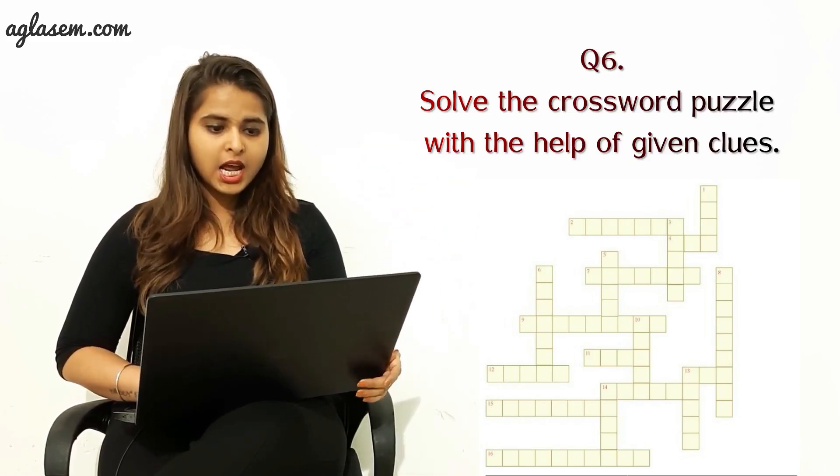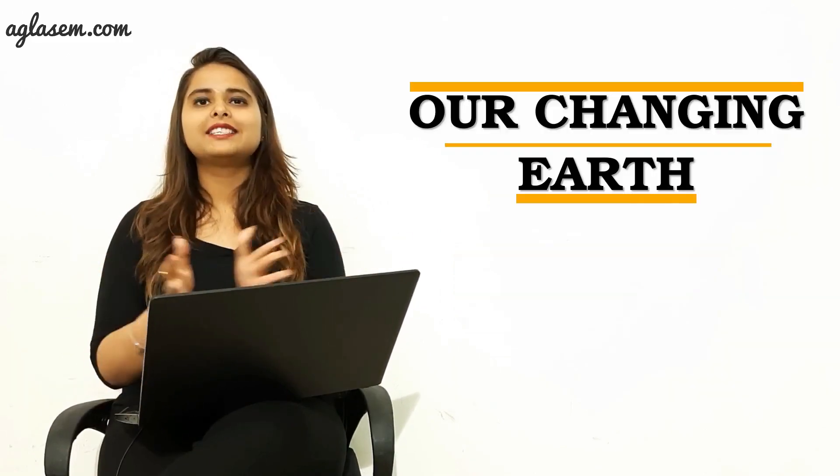The sixth question: solve the crossword puzzle with the help of the given clues, visible on screen. The across answers are: 2nd — meander; 4th — ice; 7th — glacier; 9th — waterfall; 11th — caves; 12th — leaf; 13th — sea; 14th — desert; 15th — sand dunes; 16th — flood plains. The down answers are: 1st — waves; 3rd — river; 5th — cliff; 6th — moraine; 8th — oxbow lake; 10th — loess; 13th — stack; 14th — delta.